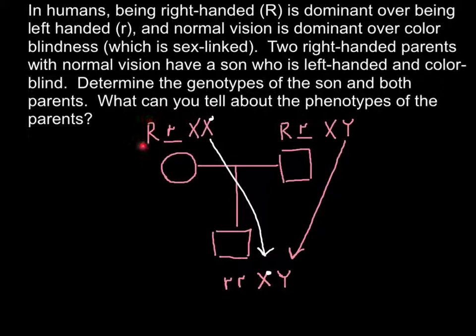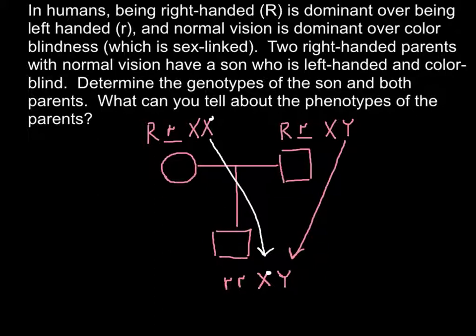The mother is heterozygous for right-handedness and carries one X chromosome with the defective gene for colorblindness — she is a carrier. The father is right-handed and has a normal X chromosome. Their child is left-handed and colorblind, and his defective X chromosome was inherited from the mother's side.